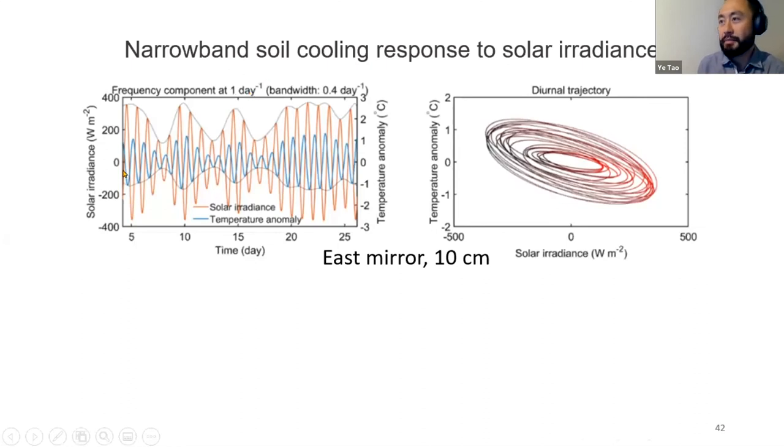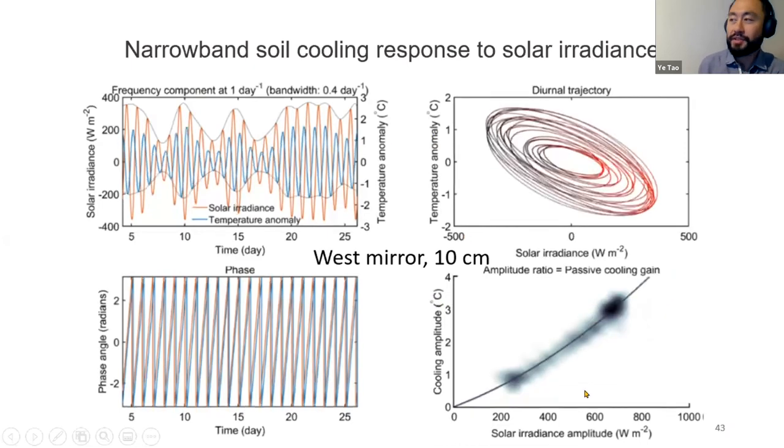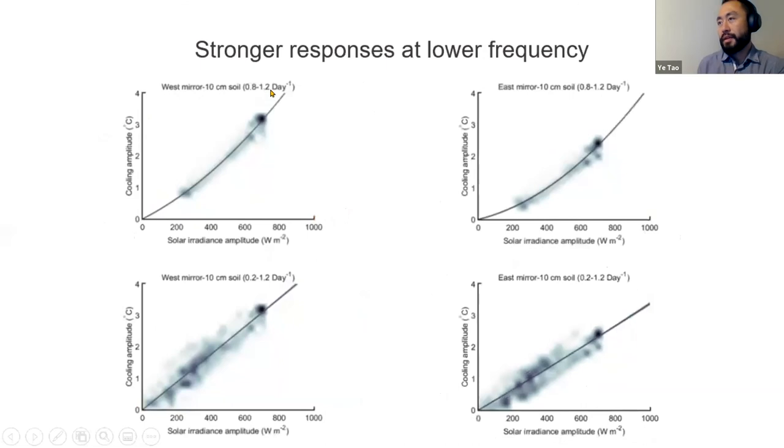We can also analyze what's driving the process by looking at the components of solar irradiance at day minus one compared with the temperature anomaly measured at the same frequency. We basically phase-aligned the two data sets and co-product the result of the envelope to show that there's a very direct correlation between the solar irradiance that's driving the passive cooling and the cooling that's actually observed. The two different mirrors showed slightly different but comparable and consistent cooling trends. The result doesn't change significantly when we include a wider bandwidth of data from around five days to roughly one day variabilities.